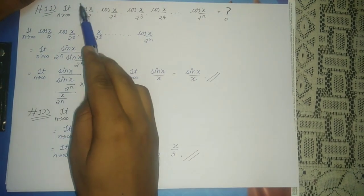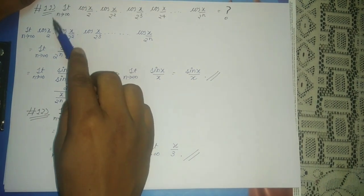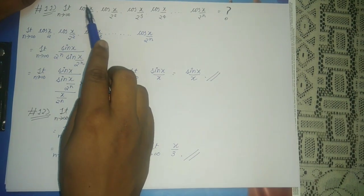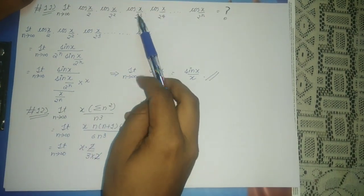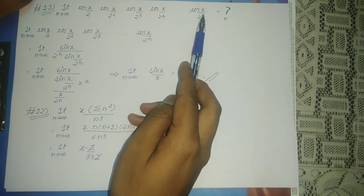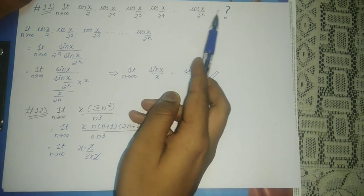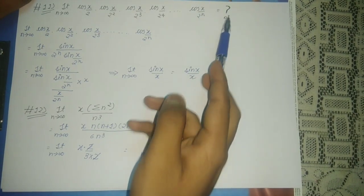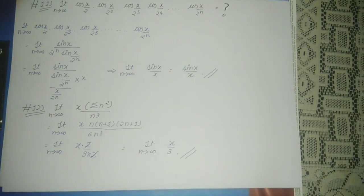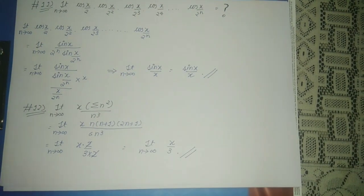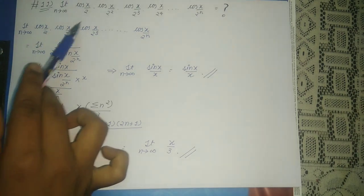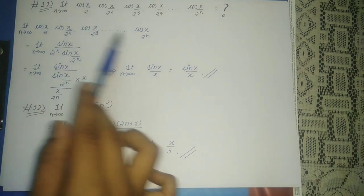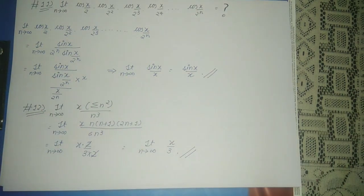The first question of this video says: limit as n tends to infinity of cos(x/2) · cos(x/2²) · cos(x/2³) · ... · cos(x/2ⁿ), and we need to evaluate this product. So this value of cos(x/2) · cos(x/2²) · cos(x/2³) multiplied till cos(x/2ⁿ)...